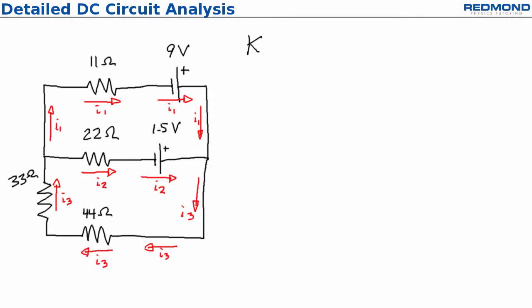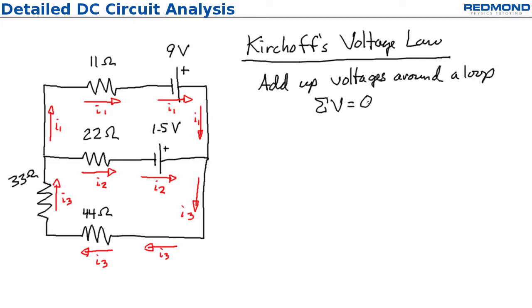Next, I apply Kirchhoff's voltage law, which means that I add up the voltage differences around a loop and write it mathematically as the sum of the voltage equals zero. The convention here is a little bit trickier, so you just need to do a few problems to get the hang of it.